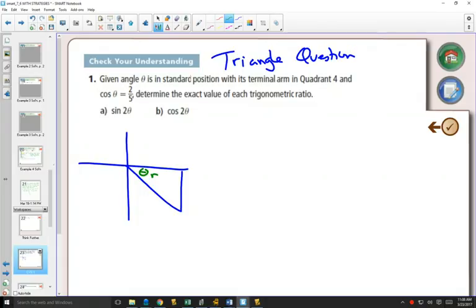Then they give us that cos is 2 fifths. And so that means the adjacent side is 2, the hypotenuse is 5. And you can do a squared plus b squared equals c squared, and calculate the other side. Once you have your triangle, you can calculate each of these things.